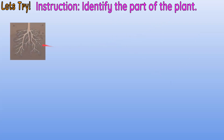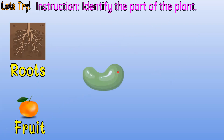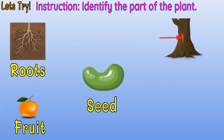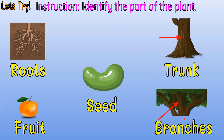Let's identify the parts of the plant. What's this? Roots. Correct. This one — fruit. Right. This one — seed. Very good. This one — trunk. Correct. This one, or these are — branches. Let's name one more time: roots, fruit, seed, trunk, and branches.